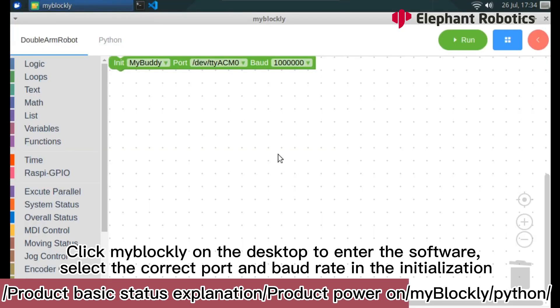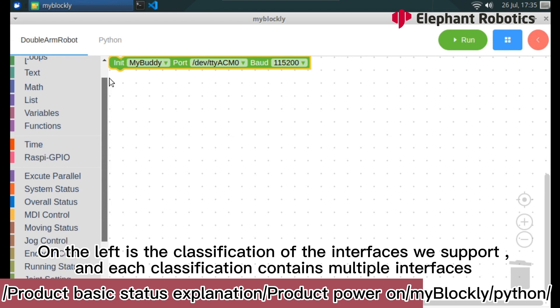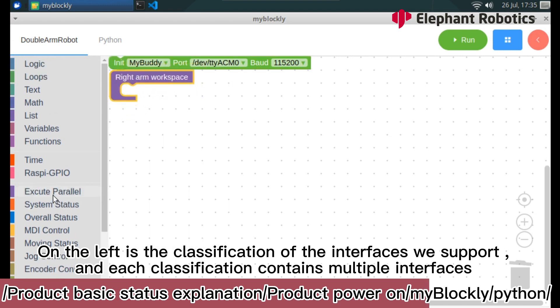Click Mi Blockly on the desktop to enter the software. Select the correct port and baud rate in the initialization. On the left is the classification of the interfaces we support, and each classification contains multiple interfaces.